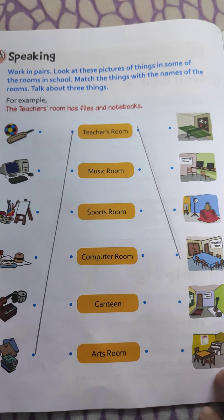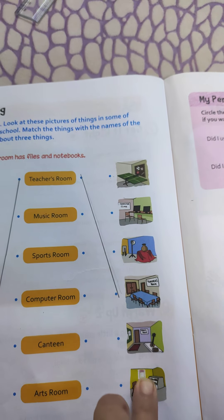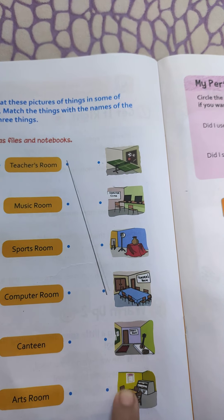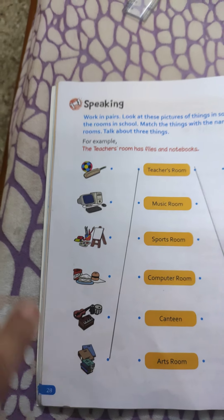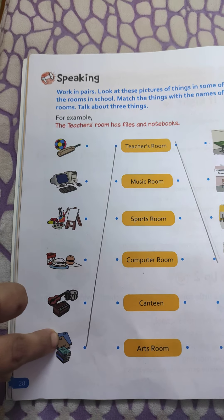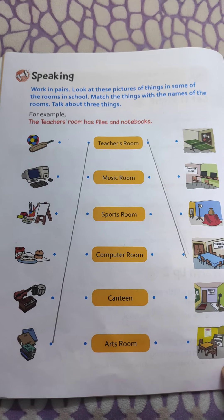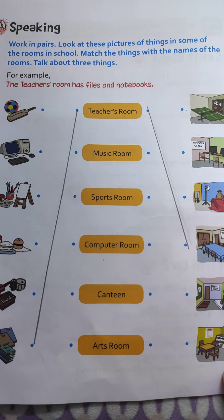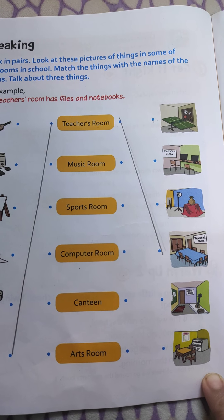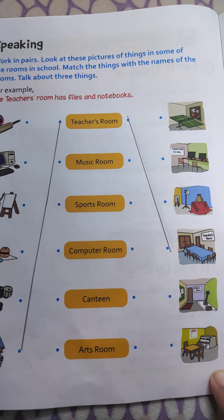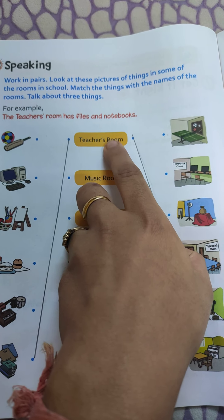Now, what are these pictures? On one side, these are the pictures of the rooms which you see in your school. And these are the pictures of the things which are there in these rooms. Now what you have to do — you have to match the particular picture with its proper room. We start with the first one, that is the teacher's room.